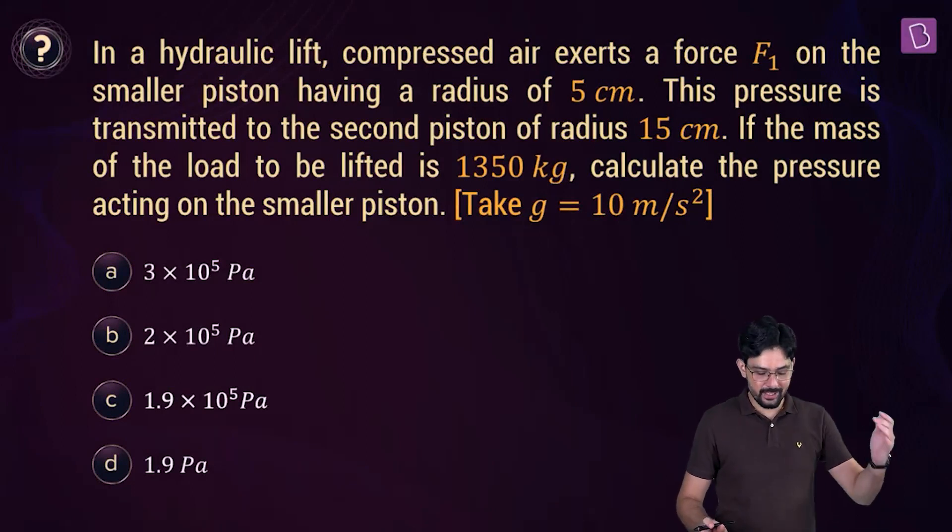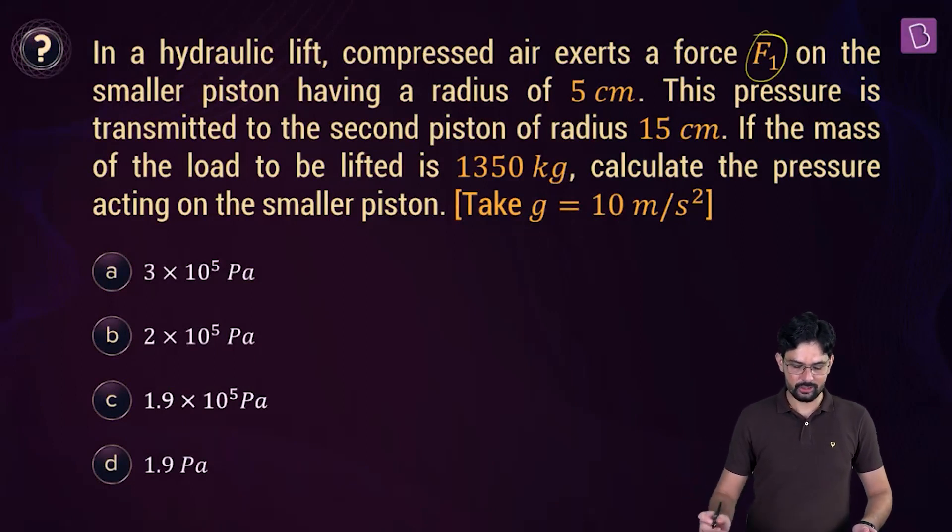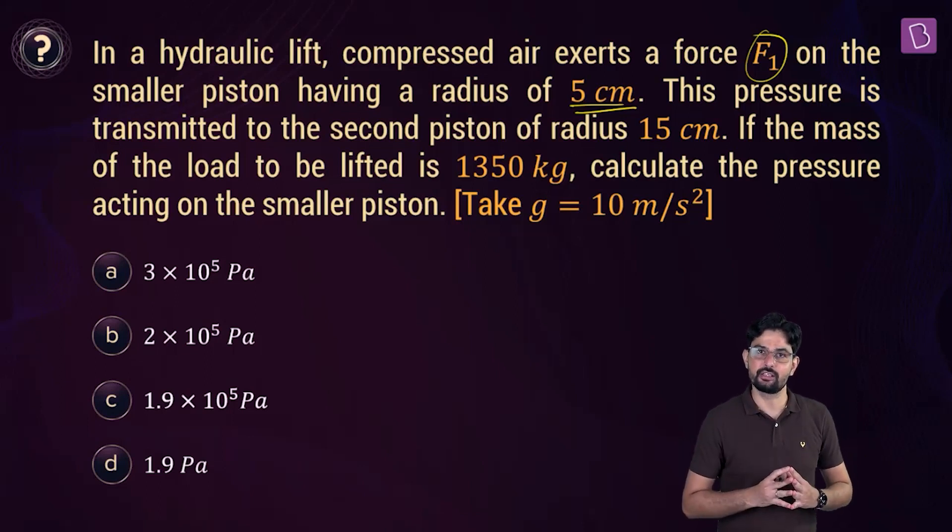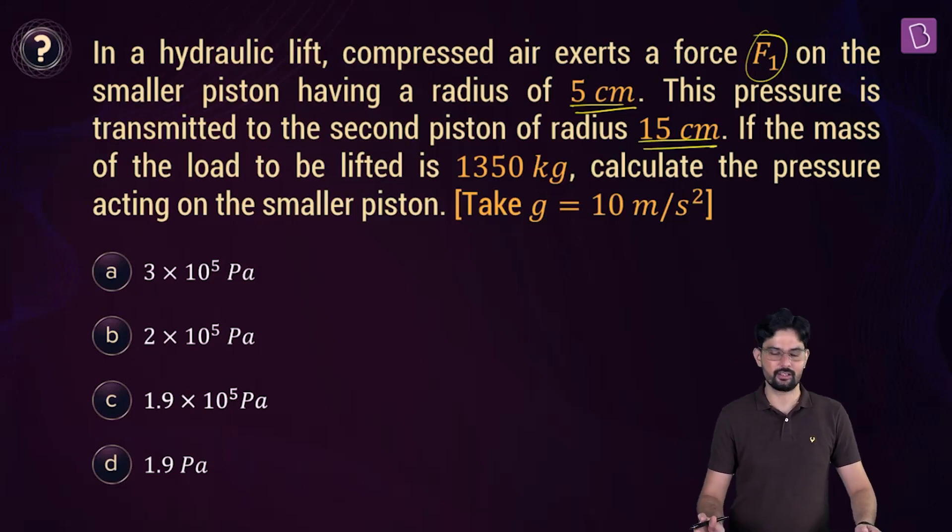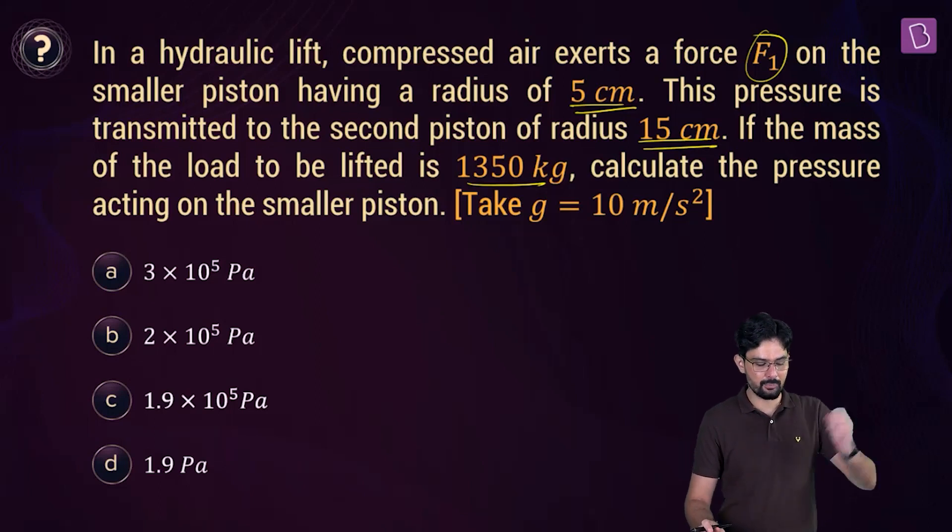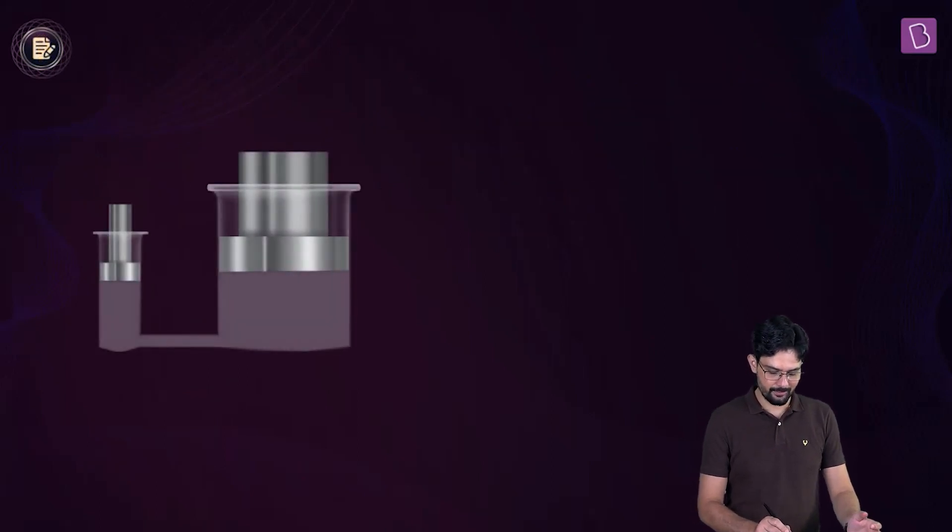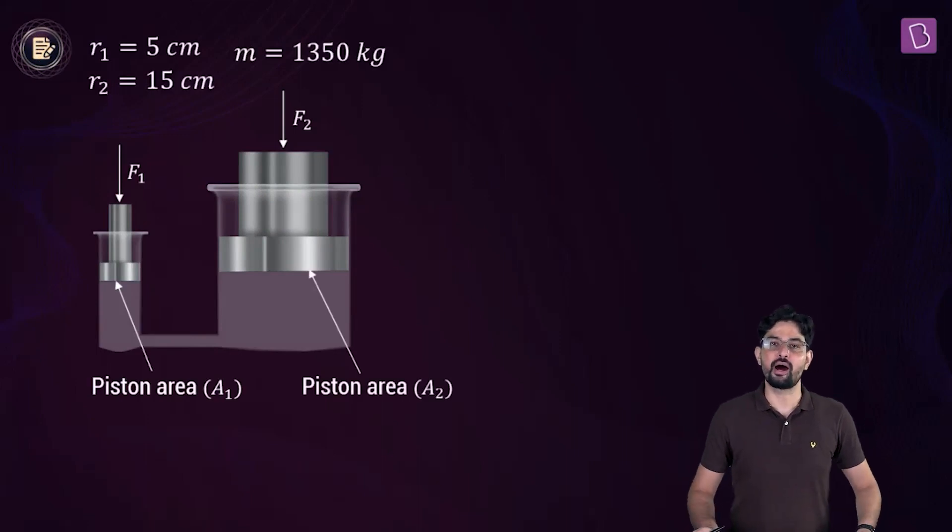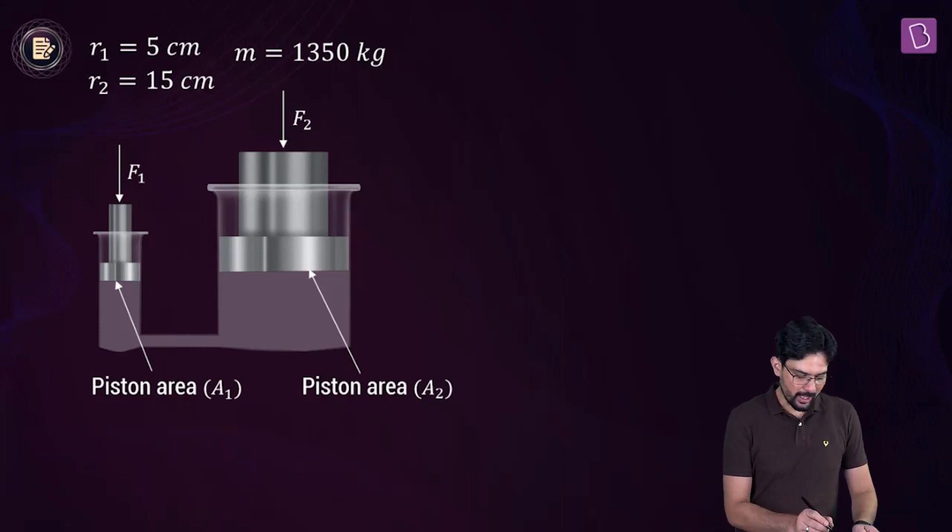Now in a hydraulic lift, compressed air exerts a force F1 on the smaller piston whose radius is 5 cm. Now this pressure is transmitted to the second piston, which obviously has the larger area. And you can see the radius of this piston is 15 cm. If the mass of the load to be lifted is 1350 kg, you have to find out the pressure acting on the smaller piston. So the setup looks something like this. And now I want you to recall the Pascal's law, according to which the pressure is transmitted undiminished throughout the fluid. So the excess pressure at this point must be equal to the excess pressure at this point.